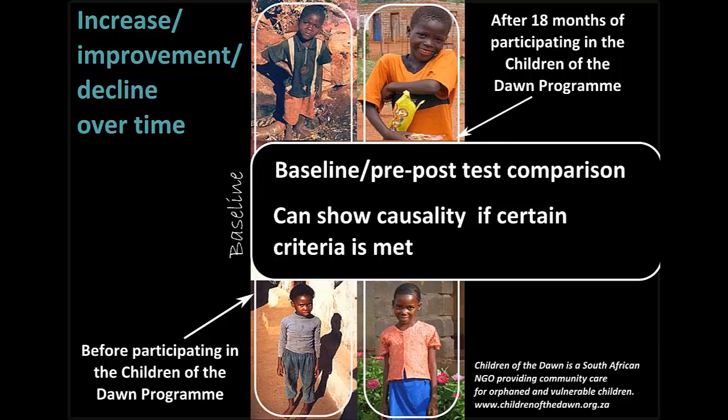With pre- and post-testing and comparison to baseline, you are comparing the participants against themselves before and after the program. If you are testing for objective factors — for example, actually testing the knowledge of participants rather than only asking whether they think they've learned something — you should be able to effectively say whether change has occurred. If you can be 100% sure that the program was the only factor influencing the changes you measure over time, this could mean your program caused the change. But it is really hard to be 100% sure, especially the longer you wait before doing your post-testing.